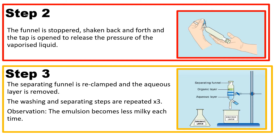Step two: the funnel is stoppered and shaken back and forth, then the tap is opened to release the pressure of vaporized liquid. Step three: the separating funnel is re-clamped using a retort stand and the aqueous bottom layer is allowed to flow into the beaker. As soon as the water level flows out, close the tap so the organic layer remains inside. The washing and separating steps are repeated three times; you'll notice the emulsion becomes less milky each time.